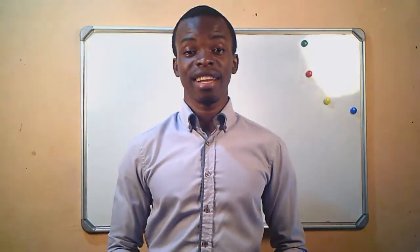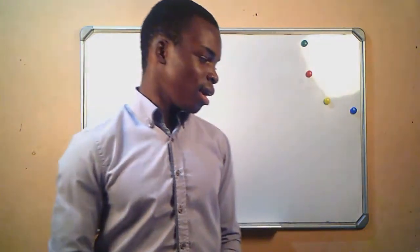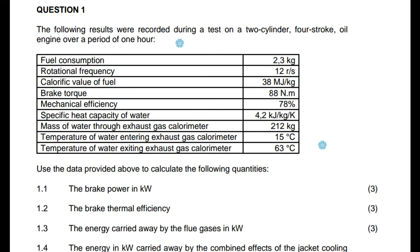Welcome to Native Engineering. This is lesson number four on IC engine power machines M6. On this lesson we're doing an exercise taken from a question paper written in August 2019. It's question number one.